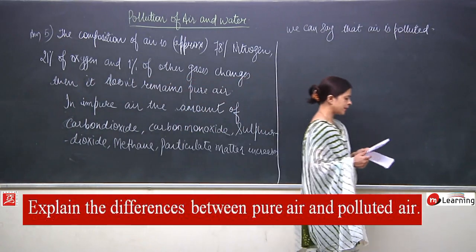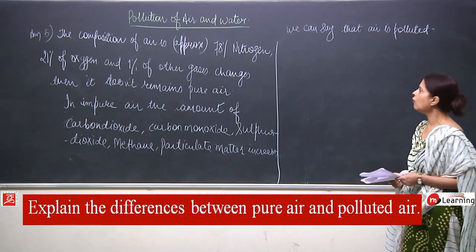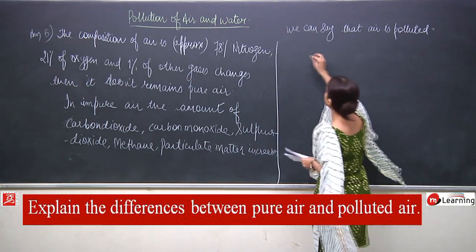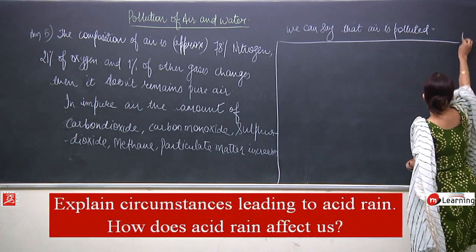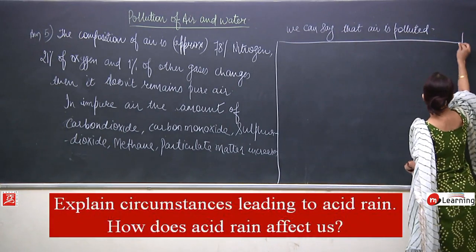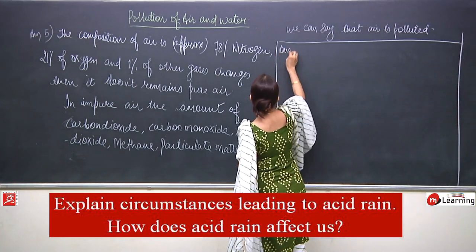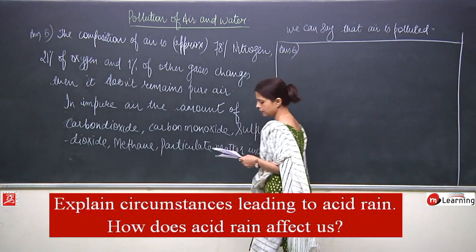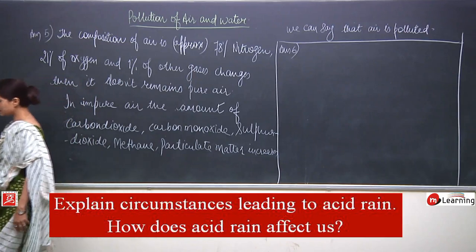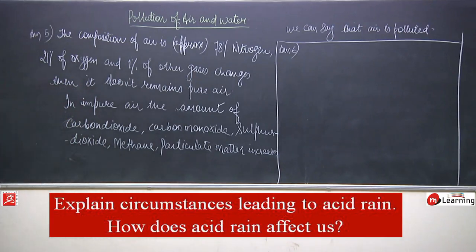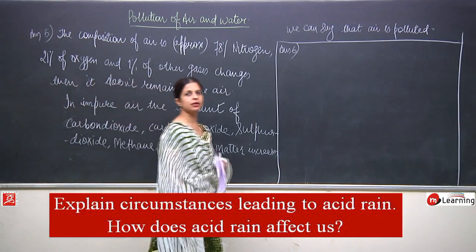This was question number 5. Now we will talk about question number 6: explain the circumstances leading to acid rain — how does acid rain affect us?